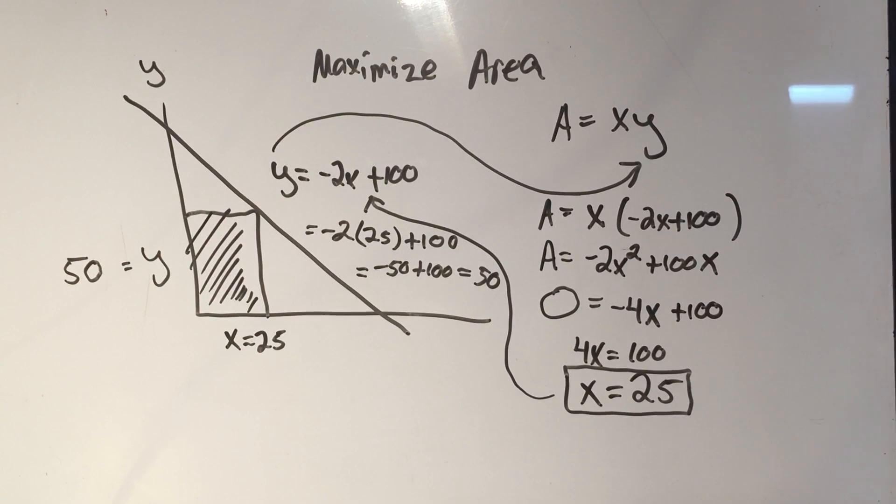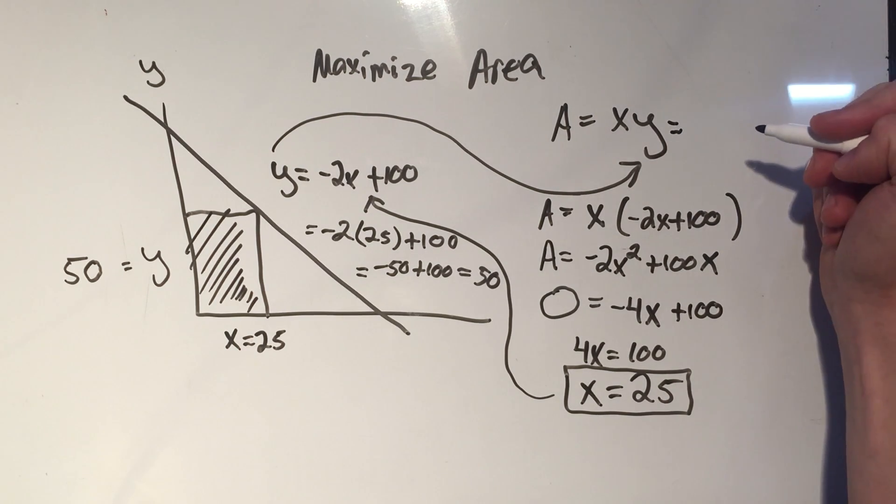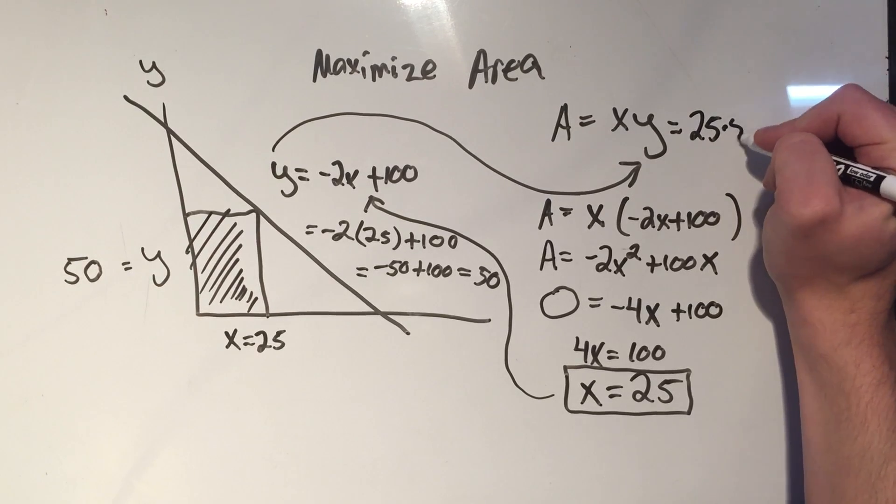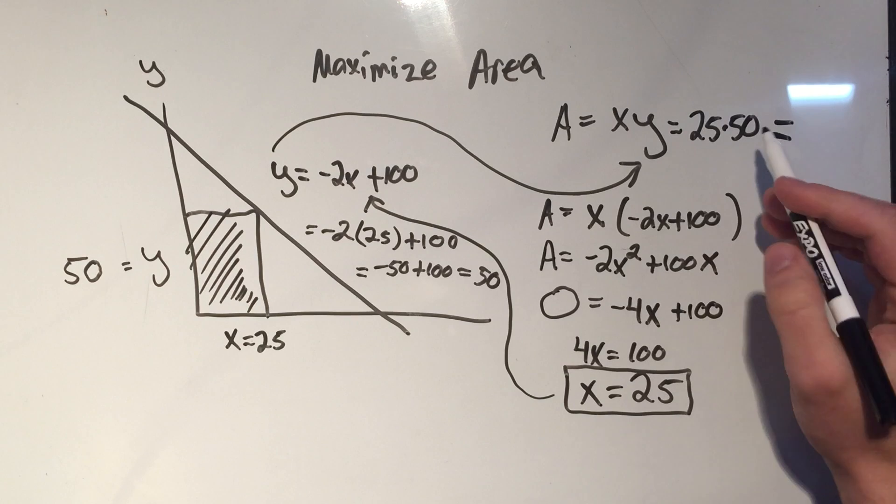And those are the dimensions of that rectangle that maximize this area subject to the constraint. If you actually want the max area, well, we can compute it x times y. x is 25. Y is 50. So that means that the maximum area is,